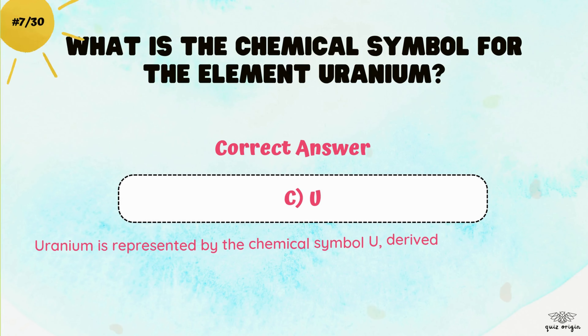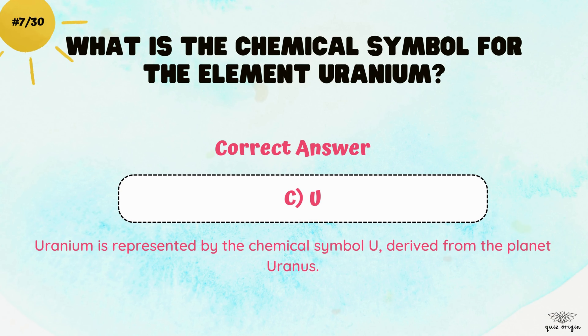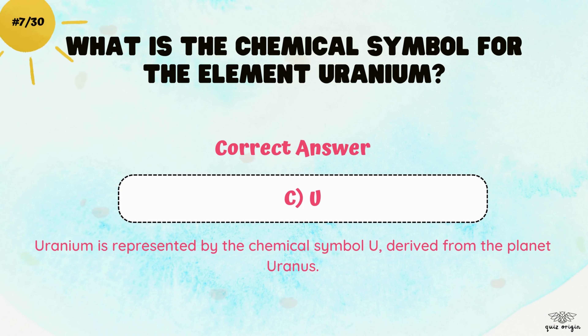The correct answer is C. U. Uranium is represented by the chemical symbol U, derived from the planet Uranus.